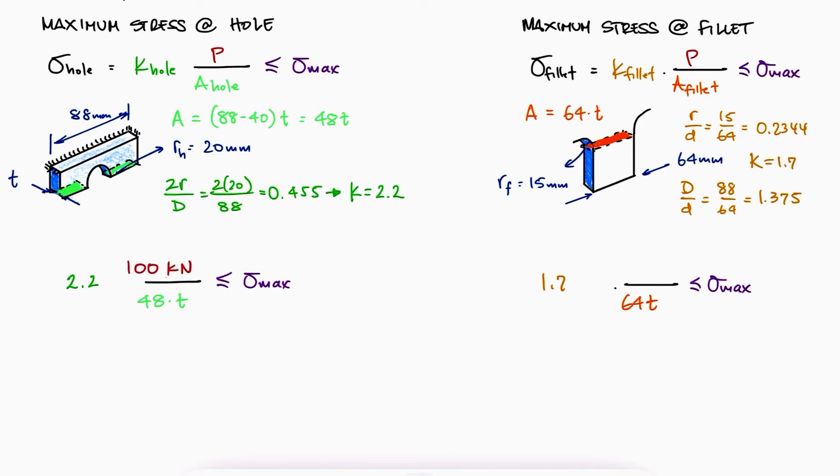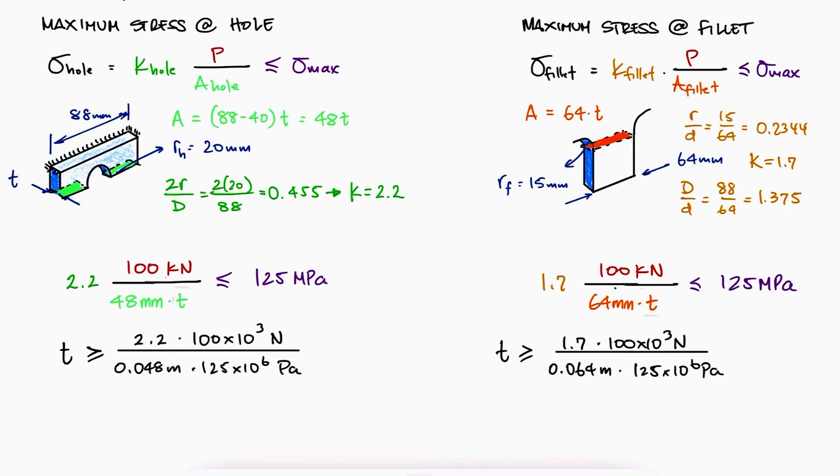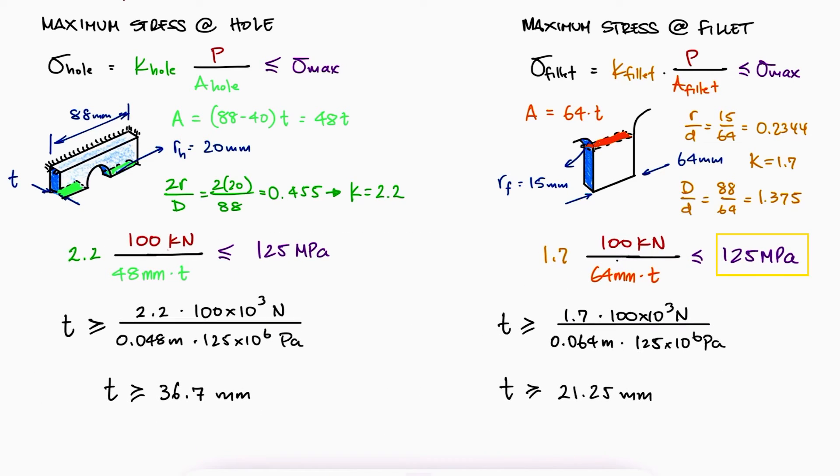Substituting the values in both equations and solving for the thickness of the plate, we see that the thickness needs to be at least 36.7 mm for the maximum stress at the hole not to exceed the maximum allowable stress with a factor of safety of 2, and it needs to be at least 21.25 mm for the maximum stress at the fillet to not exceed the maximum allowable stress with a factor of safety of 2.